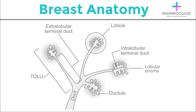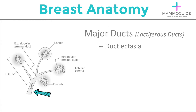The terminal ducts lead to the lobule, which is the area within the breast where milk is made. These structures together are called the terminal ductal lobular unit, and this is a very important structure where most breast pathology occurs within the major ducts.